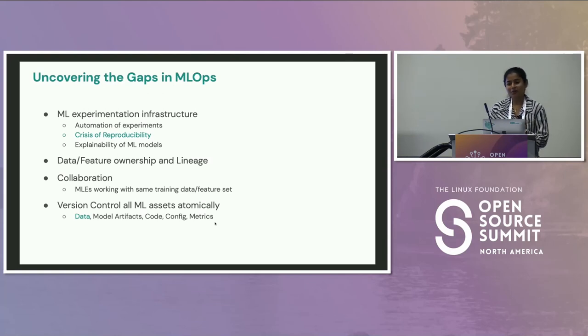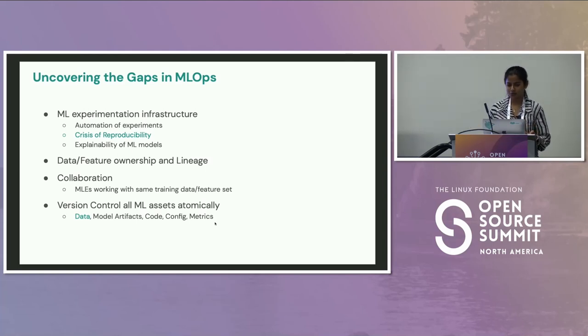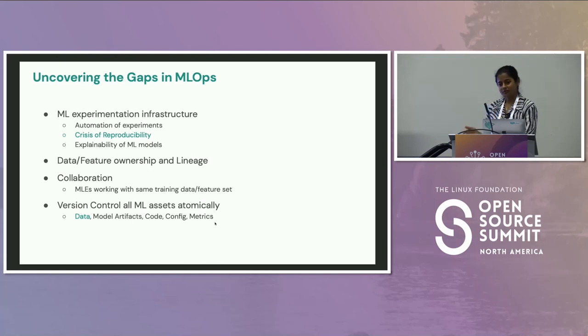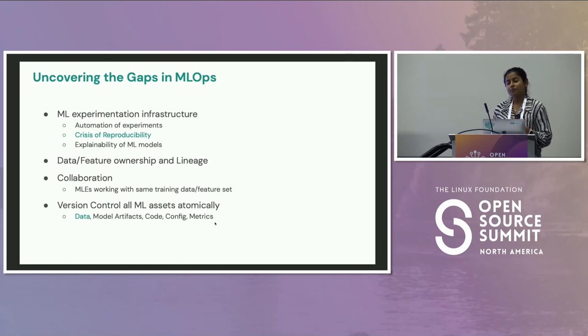Another challenge is version controlling all ML assets atomically. When we talk about version control, we do have tools in the MLOps space that cover versioning of models, code, configs, metrics and everything — but not necessarily the training data. Even feature stores today version the features but not necessarily the actual raw training data from which you derive those features. So at any point if you want to go back and create a new set of features, you won't be able to identify the specific training data that produced them.